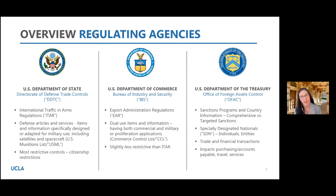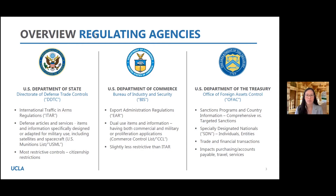While there are many regulating agencies in the export control arena, the three federal agencies we will see the most are the Department of State, Department of Commerce, and Department of the Treasury. The Department of State controls defense articles and services — items with the most restrictive controls — which we should not be dealing with much at UCLA. The Department of Commerce controls dual-use items, those with both commercial and military applications, and these are the regulations we bump up against the most as a university. They're slightly less restrictive than ITAR.